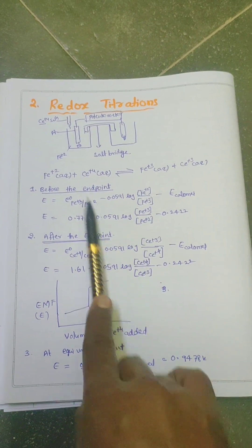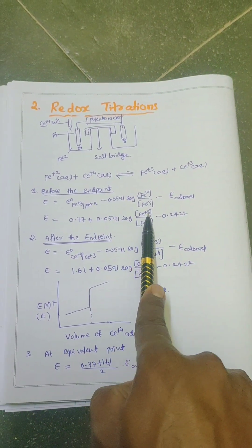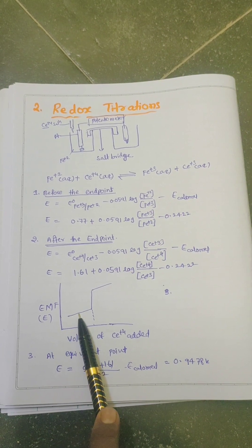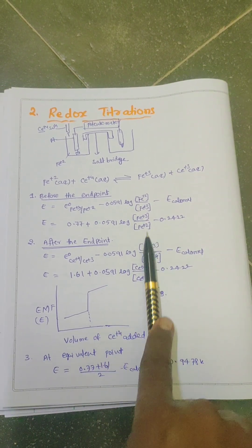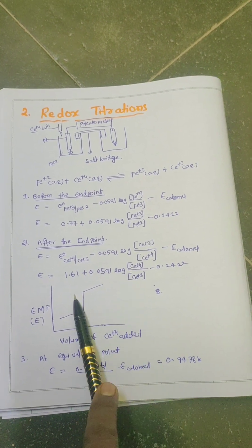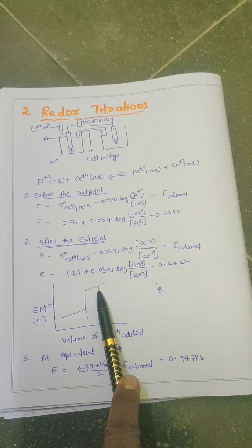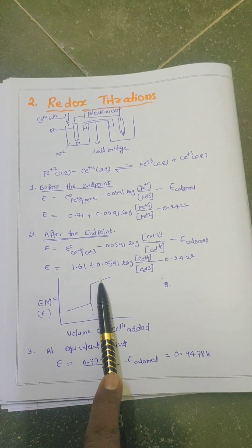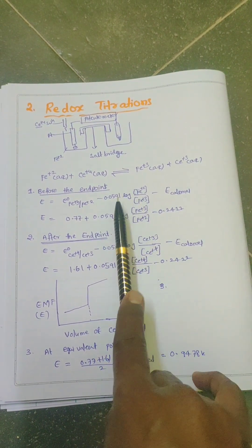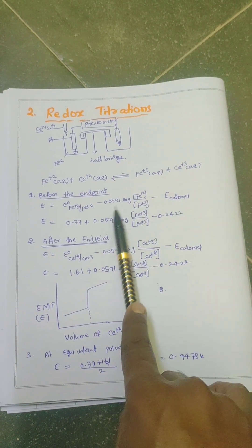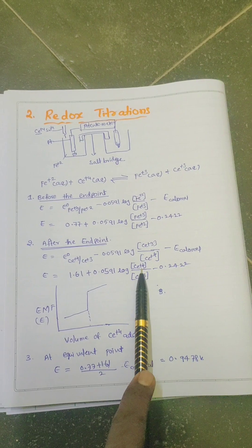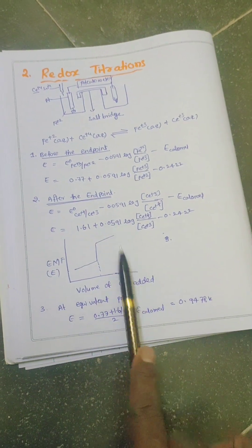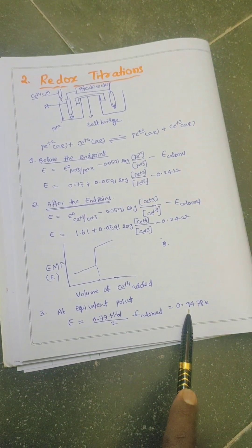Before the end point, as we go on adding ceric ions, the concentration of ferric ions goes on increasing, so the EMF of the cell gradually increases. After the end point, the concentration of ceric ions also increases, so we observe a gradual increase in the EMF after the end point as well. At the end point, we observe a sudden increase. The EMF of the cell at the end point is 0.9478 V.